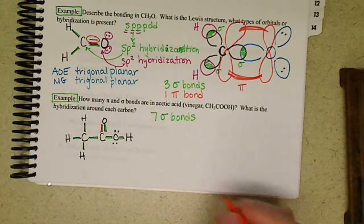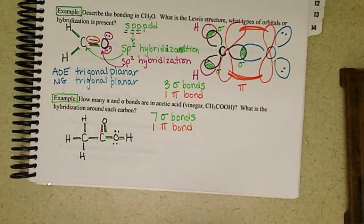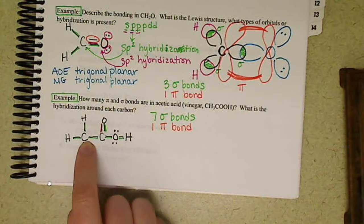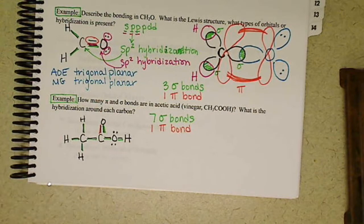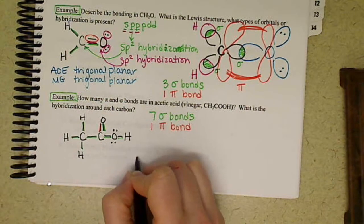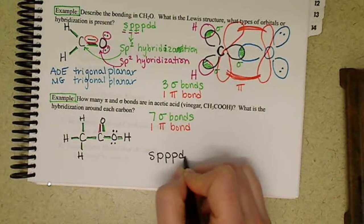We only have one double bond, so we only have one pi bond. If we look at our hybridization around each of our carbons, we list out our orbitals. We have S, P, P, P, D, D.